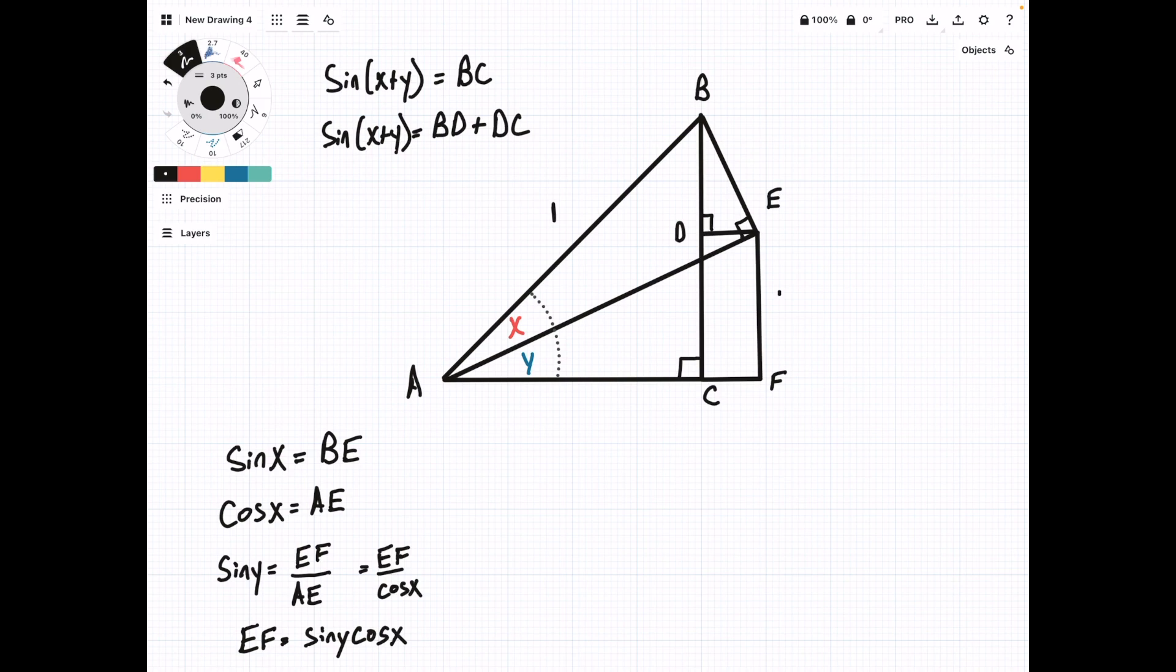Now, if we look over here, we can see that EF is equal in length to DC. So this line and this line are the same length. So we've just figured out what one part of our formula is. So I'll mark that off here.